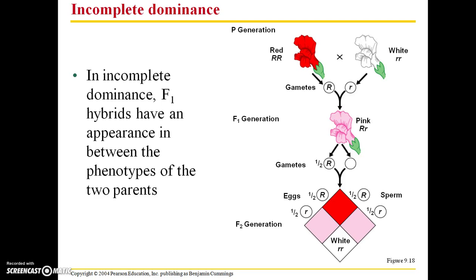There are also traits that show different patterns of inheritance. Incomplete dominance is one example, where F1 hybrids have an appearance in between the phenotypes of the two parents. For example, the parent generation consists of one parent with red flowers and one with white flowers, and the F1 generation consists entirely of individuals with pink flowers — a blend of the two color types. In the F2 generation, you end up with 50% pink, 25% red, and 25% white.